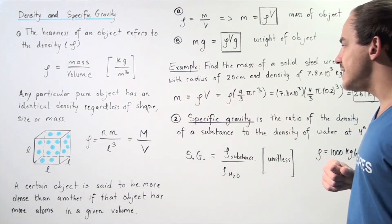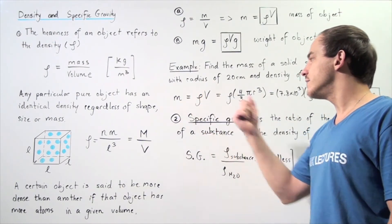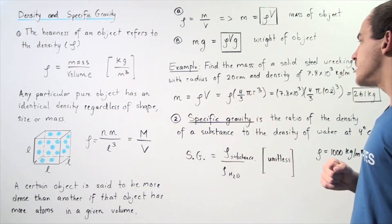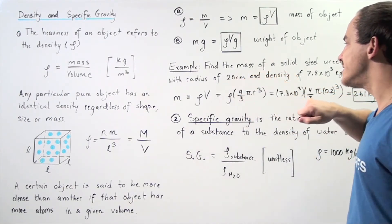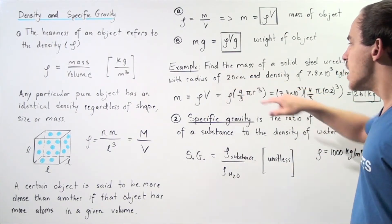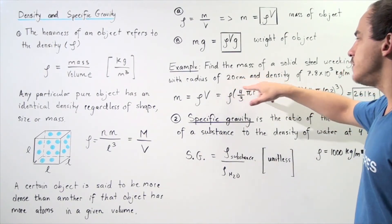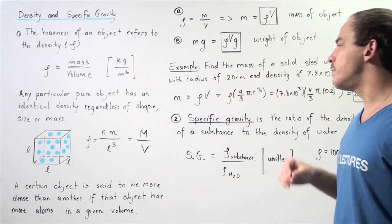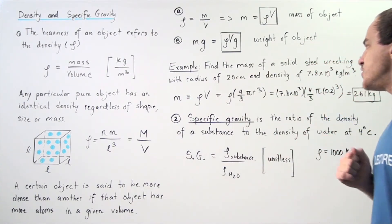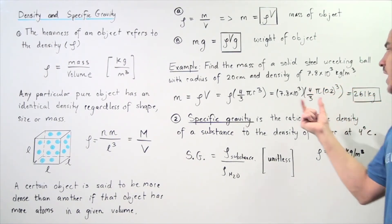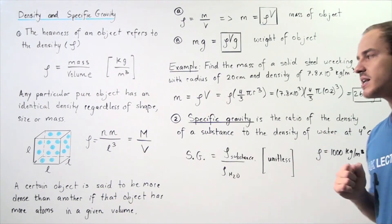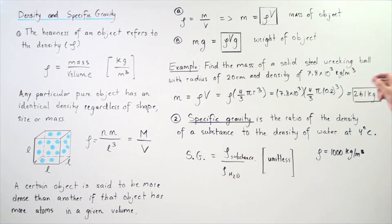The mass of the object equals the product of the density and the volume, where the volume of the sphere is 4 thirds times pi radius cubed. The radius is 20 centimeters. First, we convert 20 centimeters to meters by dividing by 100. We get 0.2 meters. So 0.2 meters cubed multiplied by pi multiplied by 4 over 3, multiply that by the density, and we get approximately 261 kilograms.